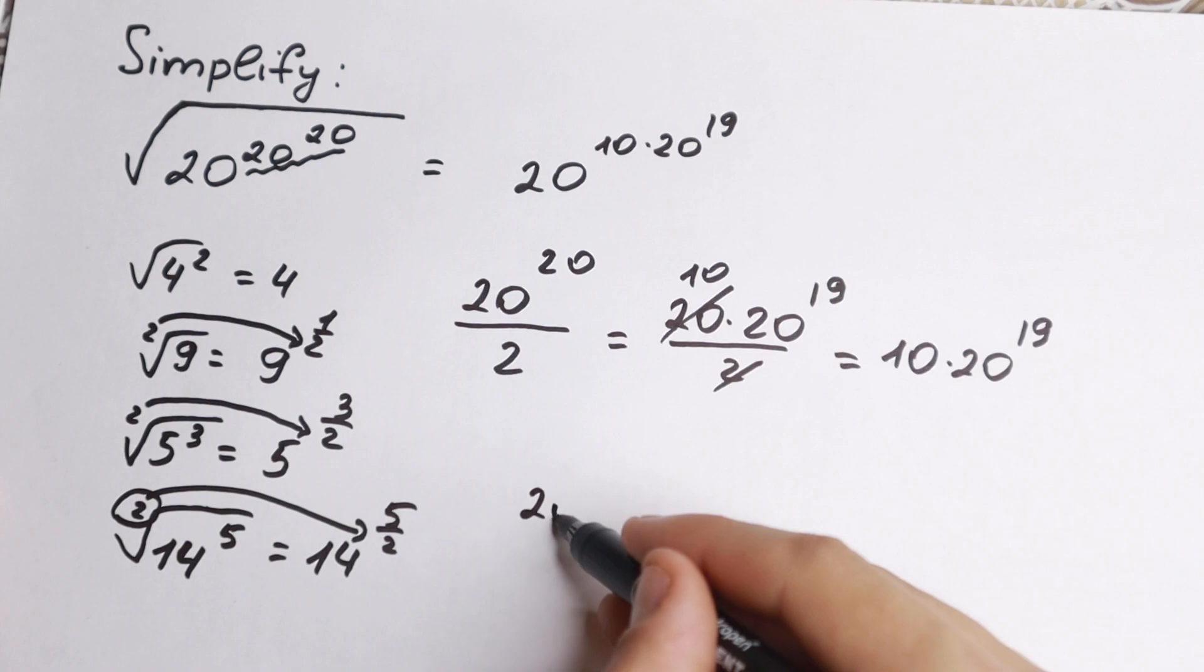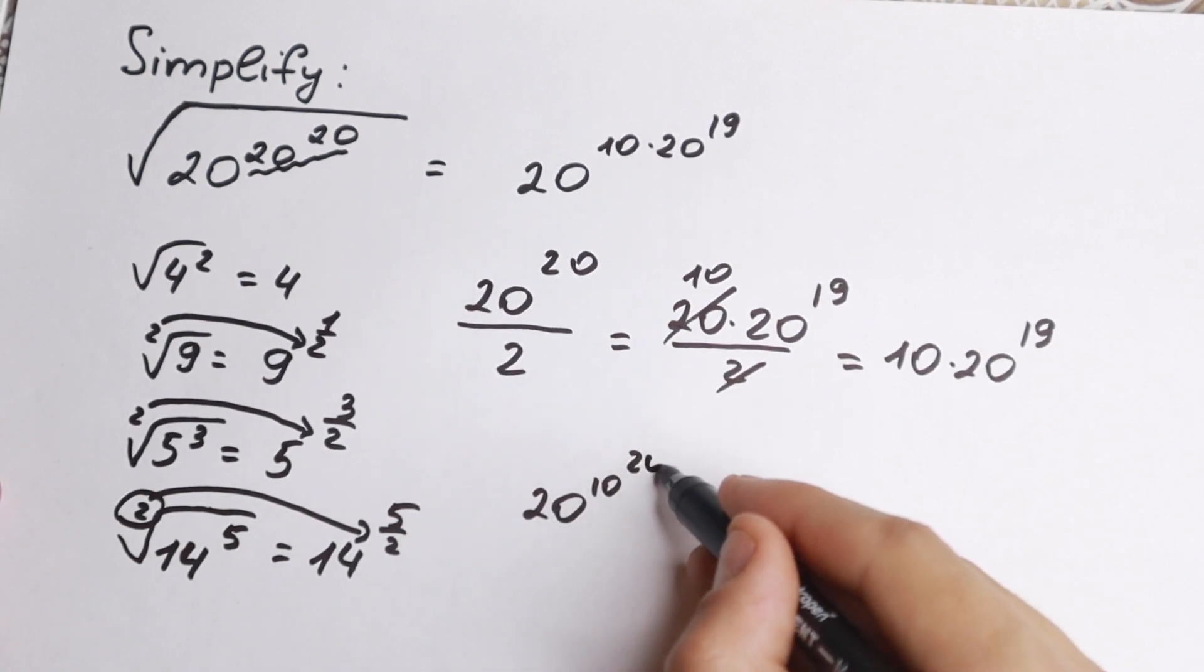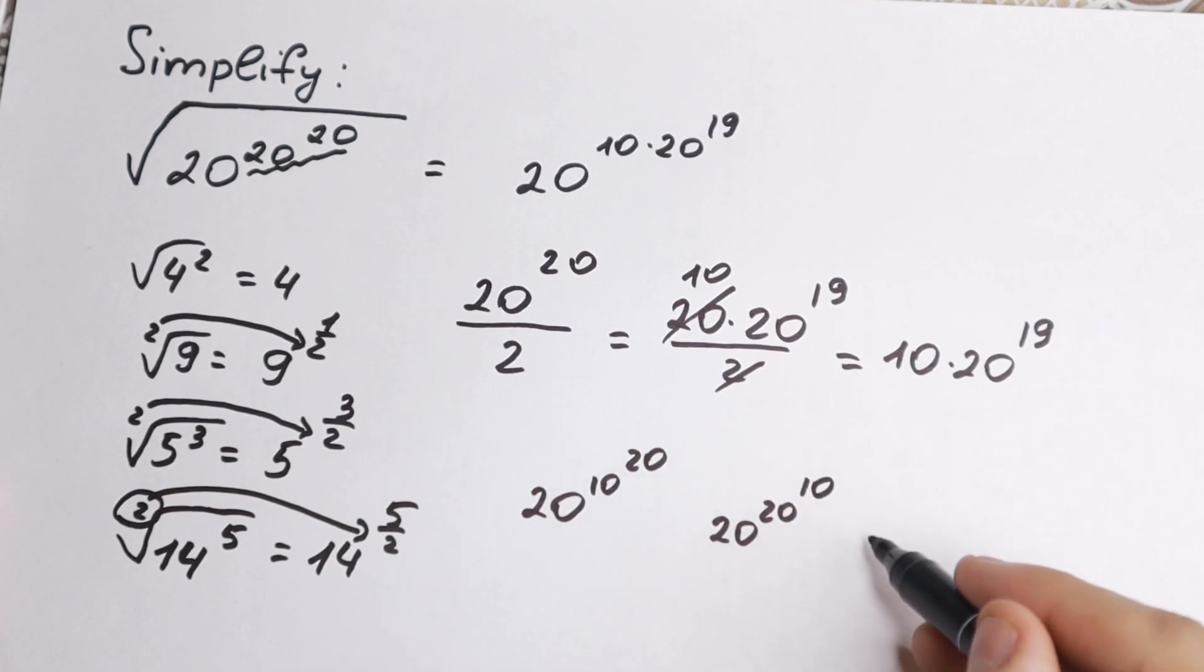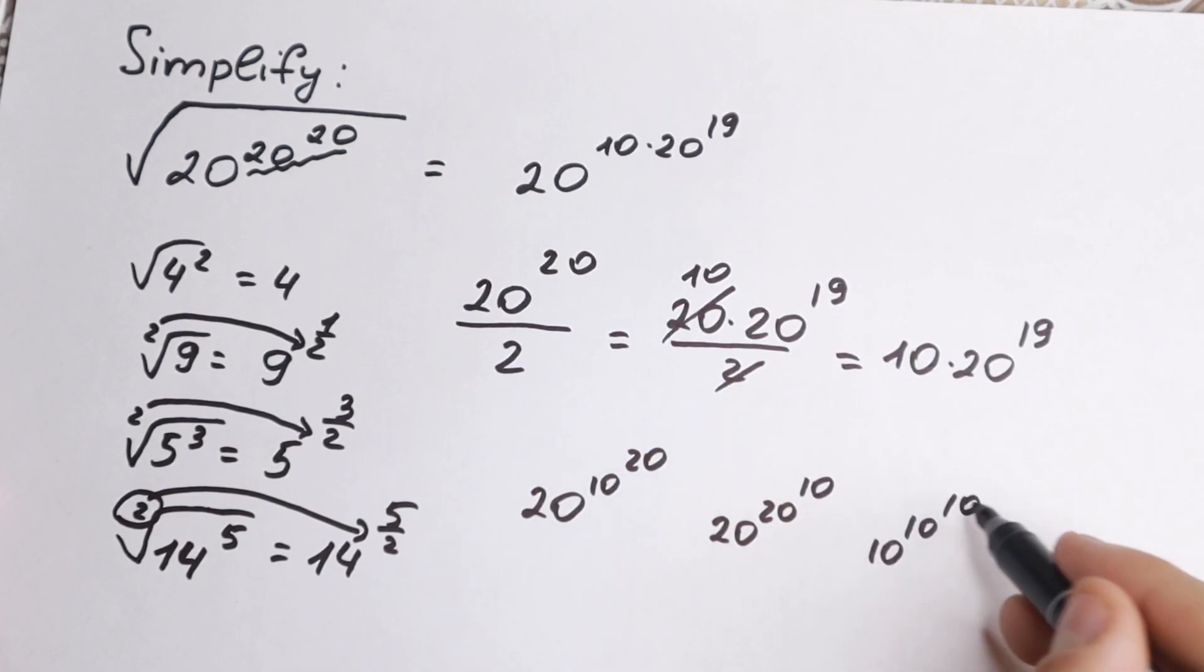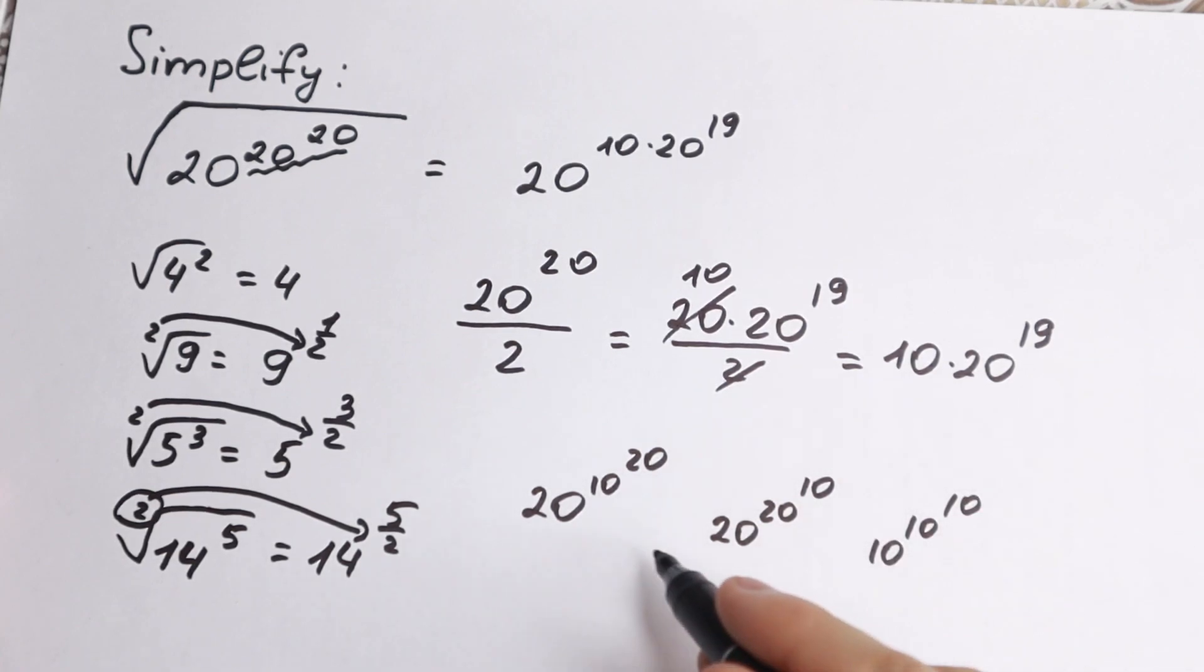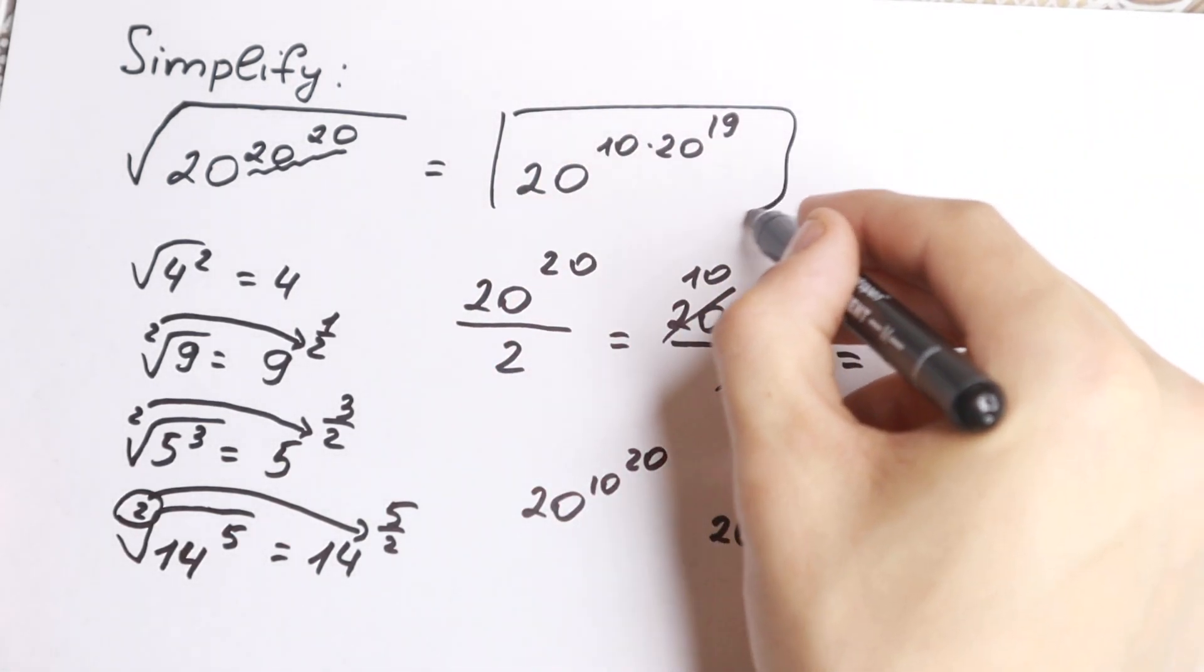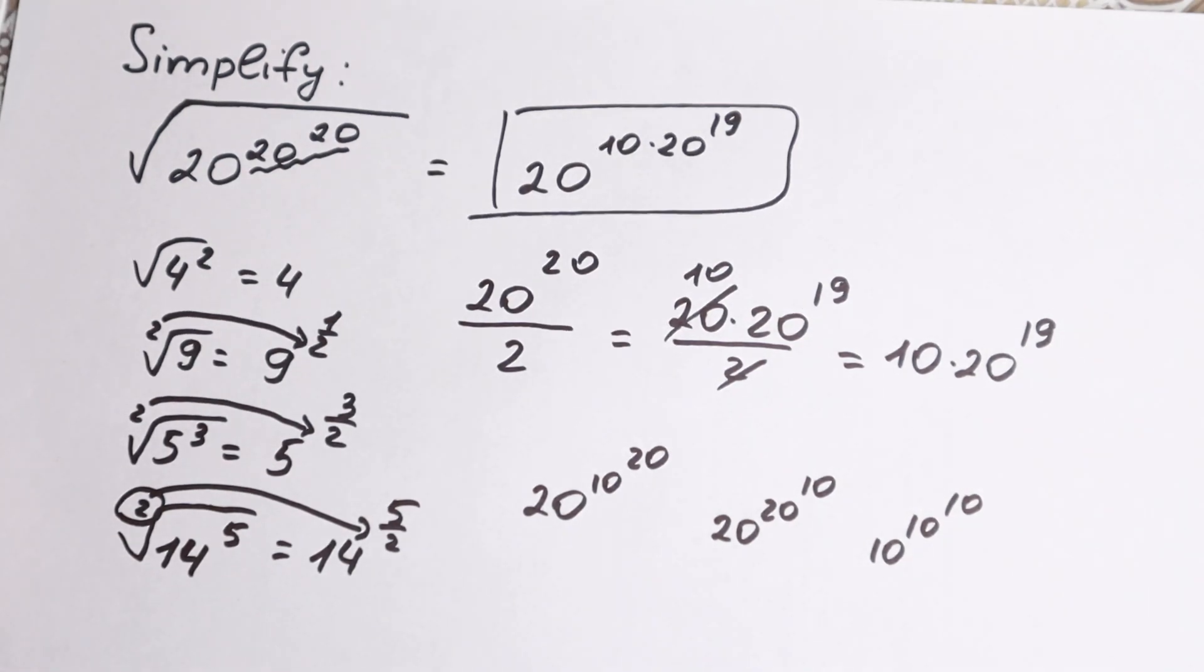A lot of students write that the answer is 20 to the power 10 to the power 20, or 20 to the power 20 to the power 10, or 10 to the power 10 to the power 10. It's something like that. And this answer is absolutely wrong, because as you can see this is the correct answer. So we hope you understand this explanation.